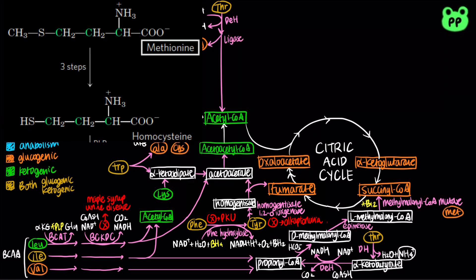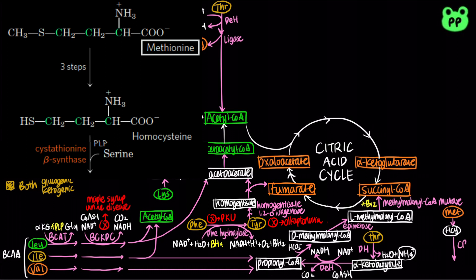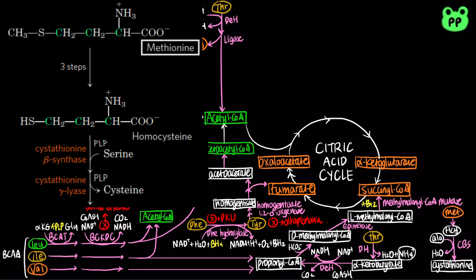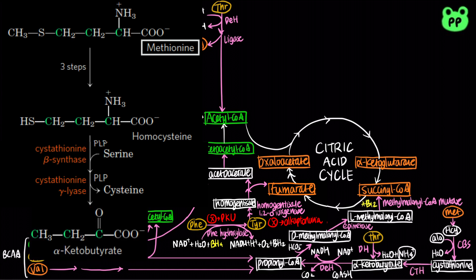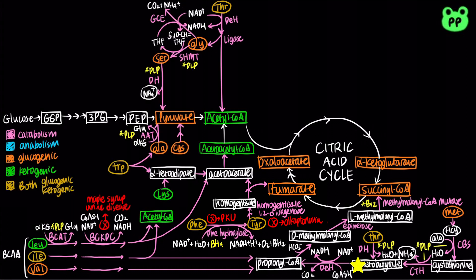Methionine can be converted to homocysteine through the activated methyl cycle. Cystathionine beta-synthase, abbreviated as CBS, then combines homocysteine with serine to form cystathionine, which is subsequently cleaved by cystathionine gamma-lyase, abbreviated as CTH, to form ammonium ion, cysteine, and alpha-ketobutyrate. Both reactions also require the cofactor PLP. Alpha-ketobutyrate is then converted to propionyl-CoA, which is ultimately catabolized to succinyl-CoA to enter the citric acid cycle. From these pathways, we see that valine, isoleucine, threonine, and methionine can all be degraded to succinyl-CoA.